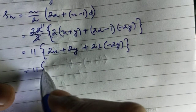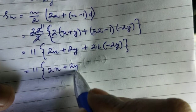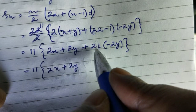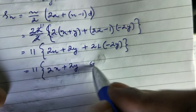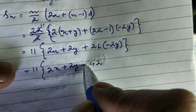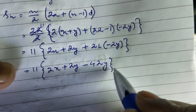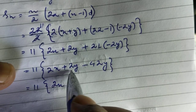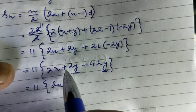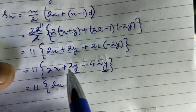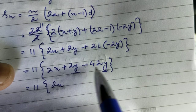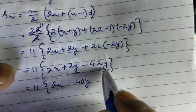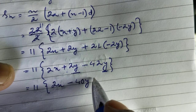Expanding: 11 times [2x plus 2y, then 21 times minus 2y equals minus 42y]. Since 2y is positive and 42y is negative, we get 2y minus 42y equals minus 40y. So we have 11 times [2x minus 40y]. Since both terms have a factor of 2, we take 2 as common, giving 11 times 2 times (x minus 20y).